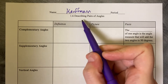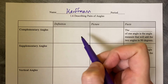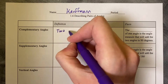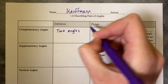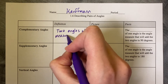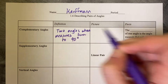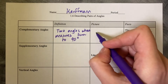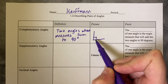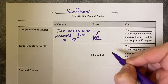1.6 describing pairs of angles. Complementary angles are two angles whose measures sum to 90 degrees. A picture could look like this: a 90 degree angle with a square in the corner, and you can split this into two pieces where this is angle 1 and angle 2.